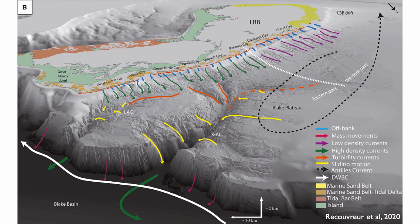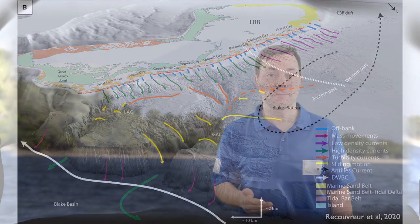It's interesting to see how sediments are transported from the Little Bahamas Bank over the edge where the reef is — shown by the blue arrows — down towards the Little Bahamas shelf and then into the canyon, and eventually straight into the Blake Basin. We have different types of sand belts and tidal bar belts that we can observe there, depending on the influence of waves or tidal forcing.